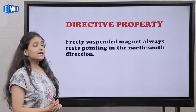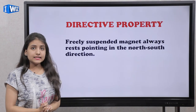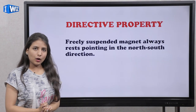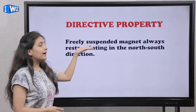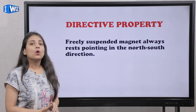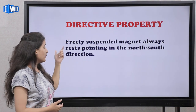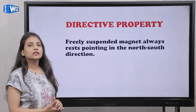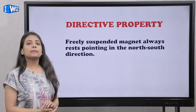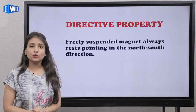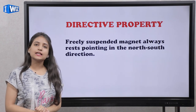The next property is the directive property. Freely suspended magnets always rest pointing in the north-south direction. This is the directional property of the magnet.